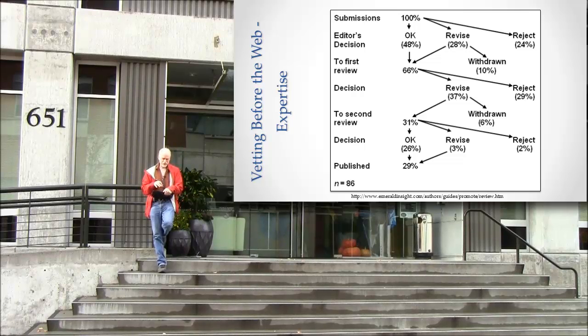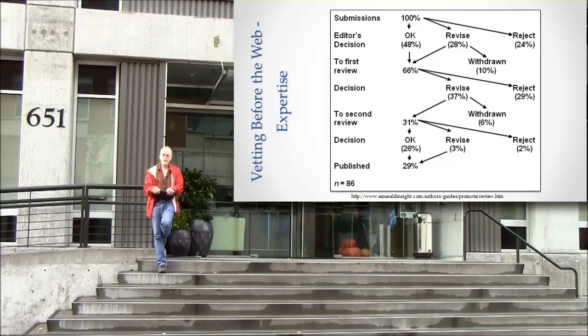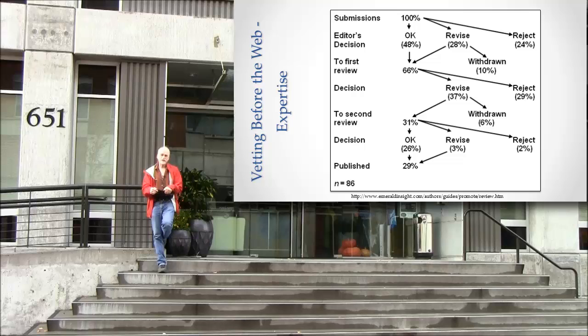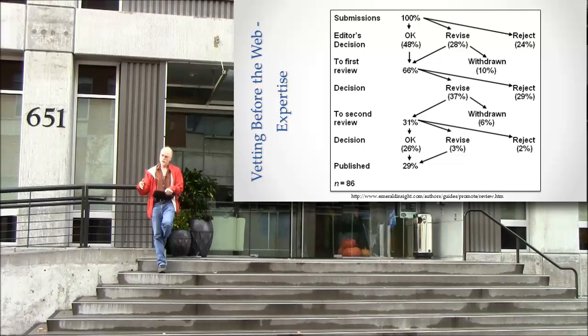And I'm going to zero in specifically on the idea of expertise. The diagram that you see here is sort of a flowchart. It's a series of steps that explains how a decision is made to publish a research article. So of all the different kinds of information, the research article is the one that goes through the most rigorous process to decide whether or not it should be published. And so that's what I want to focus on.